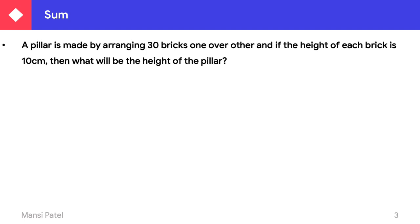Let us see another sum. A Pillar is made by arranging 30 bricks one over the other. Here we have to make one Pillar, and to make that Pillar we are using 30 bricks. If the Height of each Brick is 10 cm, then what will be the Height of the Pillar? From the Height of one Brick, we have to find out the Height of the Pillar. Let us see how we solve this sum.